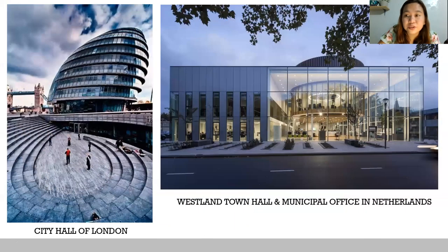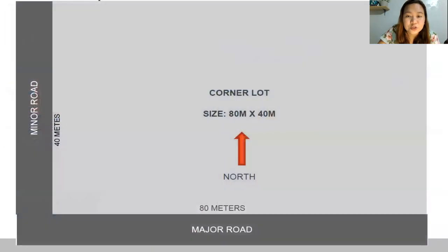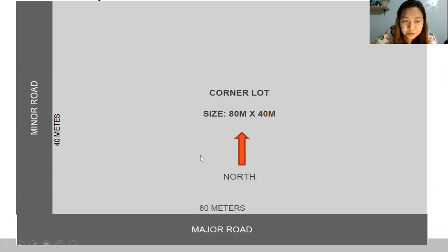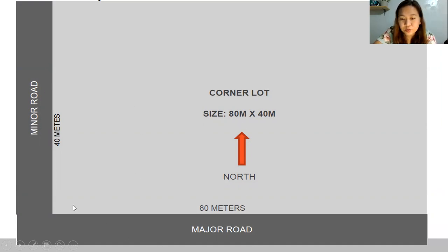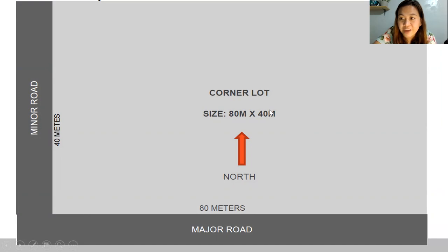Your lot is a corner lot — 80 by 40 meters. This is your minor road and major road, with the north side indicated. Please make sure you follow your setbacks and plan the flow of vehicle and pedestrian entry carefully. Analyze your site well.